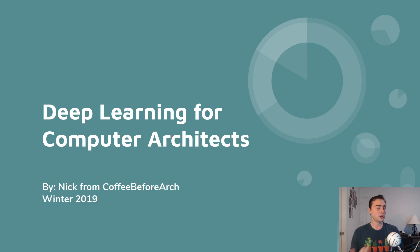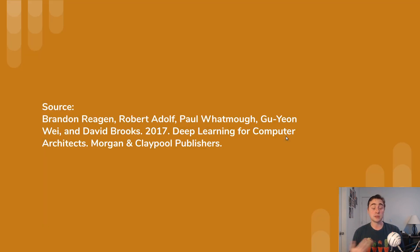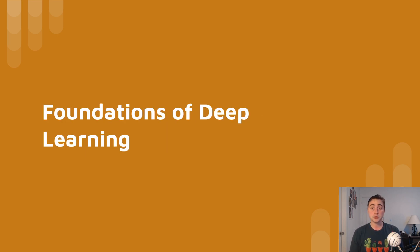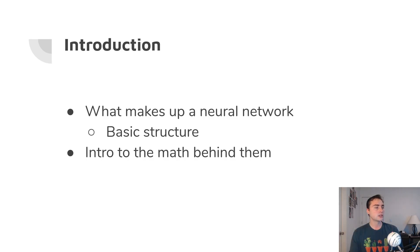Hey everyone, I'm Nick, and welcome to part two of Deep Learning for Computer Architects. This is based on the book of the same name that comes from the Synthesis Lectures on Computer Architecture. In this episode of the series, we're going to be talking about the foundations of deep learning. This will be covering chapter two or the first half of chapter two. We're going to be going over the basic structure of a neural network, as well as a little bit of the math behind neural networks.